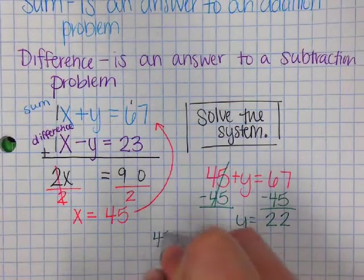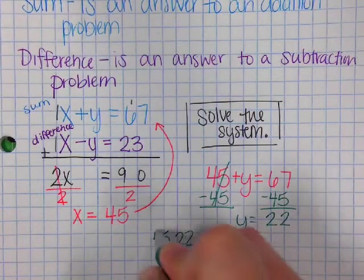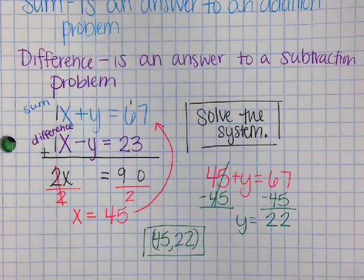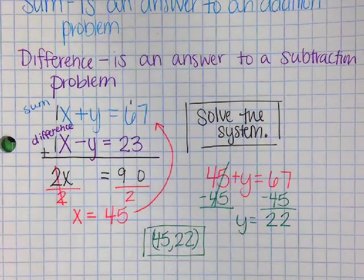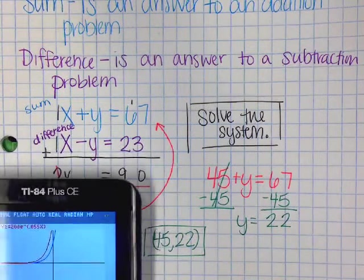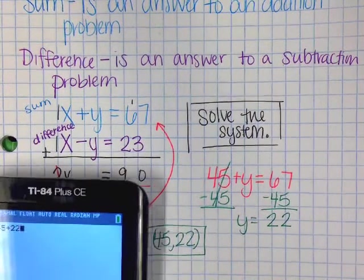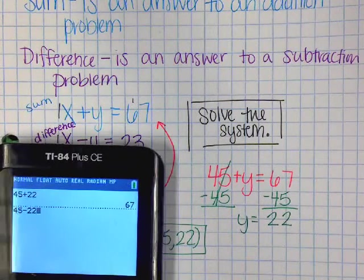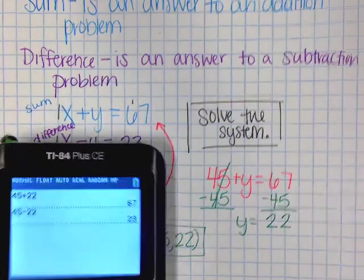So then we have 45 comma 22. And that is our solution. I'm going to go ahead and plug those in just to see. So 45 plus 22, that equals 67. And 45 minus 22, that equals 23.